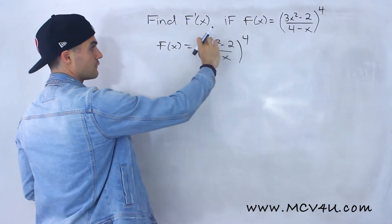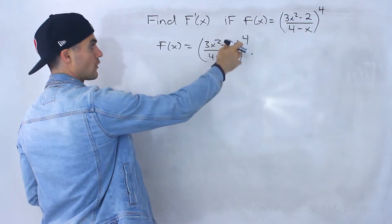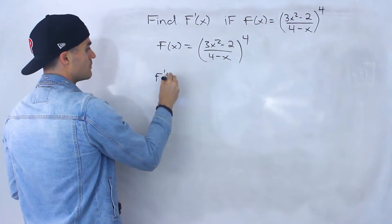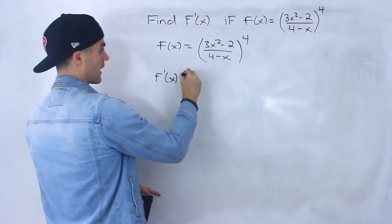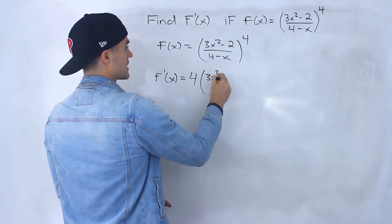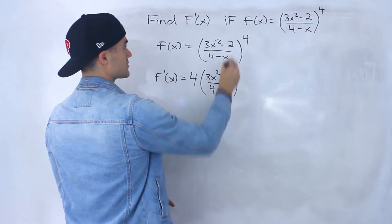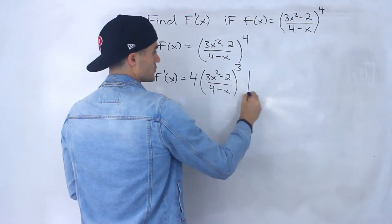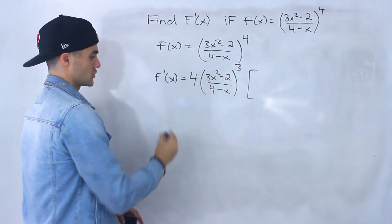So notice we have a rational function within another function — that's all to the power of 4. Like we've been doing, you want to take the derivative of the outside first: bring the 4 down, the inside function stays the same, subtract 1 from the exponent so that would be a 3 there. But then we have to multiply by the derivative of that inside function.